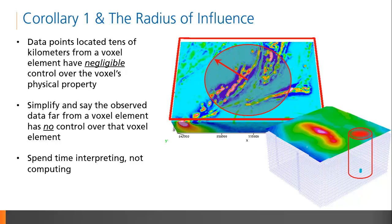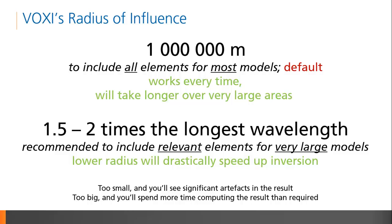An observation point centered at the top of the cylinder affects only the model elements within that cylinder. The default radius of influence in VOXI is 1,000 kilometers. At most scales, this effectively means that all model elements contribute to a given observation point. For very large inversions, computation time can be drastically reduced by lowering the radius of influence to one-half to two times the longest wavelength.